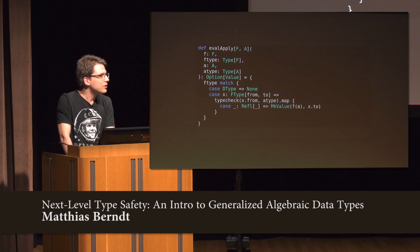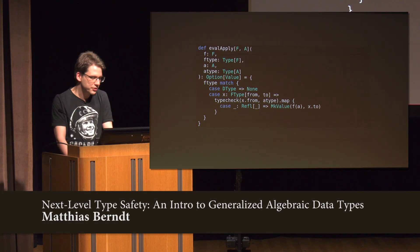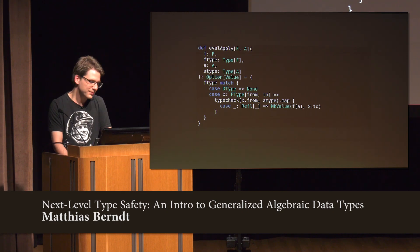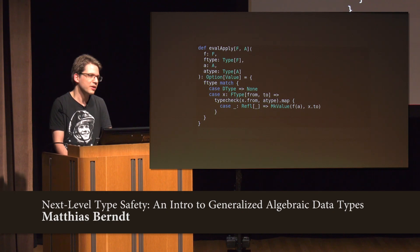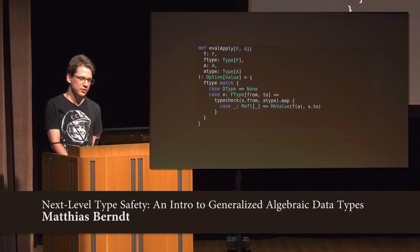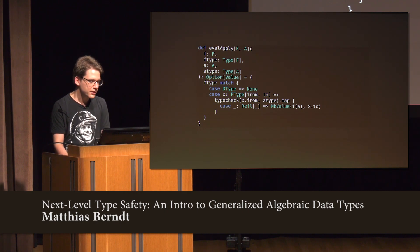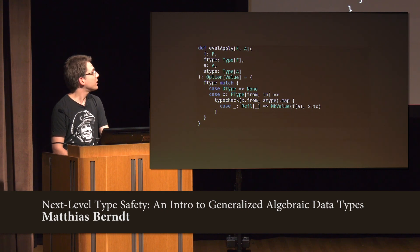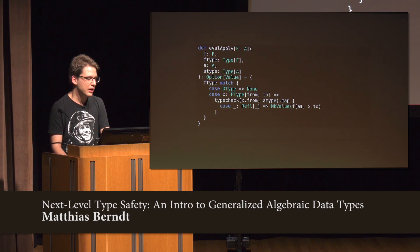This is the function that attempts to evaluate a function call. It takes a value of type F and a value of type A, along with their type descriptors. If what we hoped was a function type is actually a Double, we can't call it — return None. If it is a function type, we check that the function's argument type is the same as the type of the value we're passing. If so, through pattern matching, the compiler understands the argument types match and allows us to make the function call — even though it had no prior reason to assume F was callable with an argument of type A.